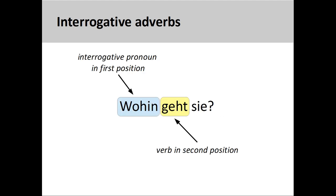For example, in the sentence here, wohin geht sie? Where is she going to? The interrogative adverb wohin inquires about the direction of the subject of the sentence.